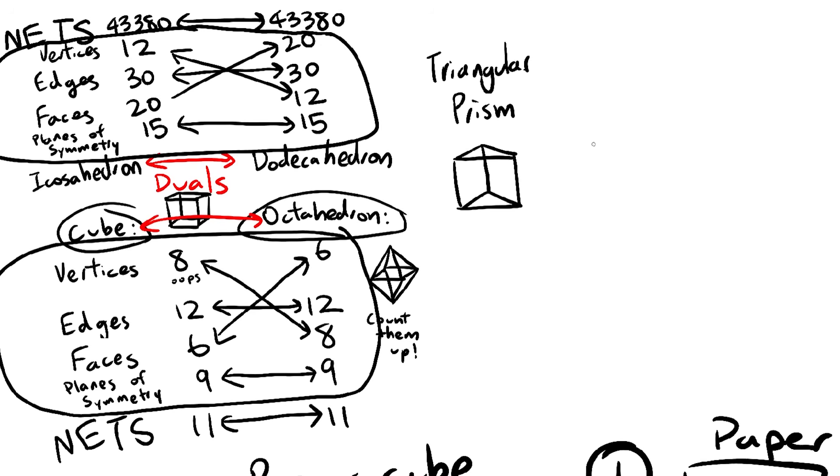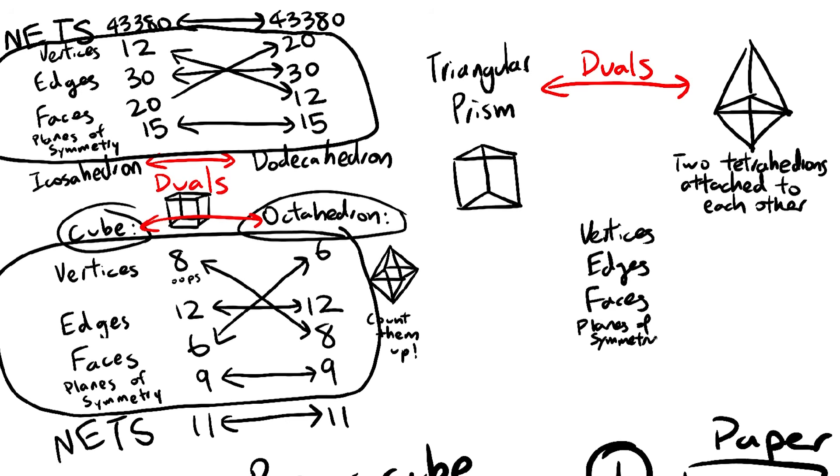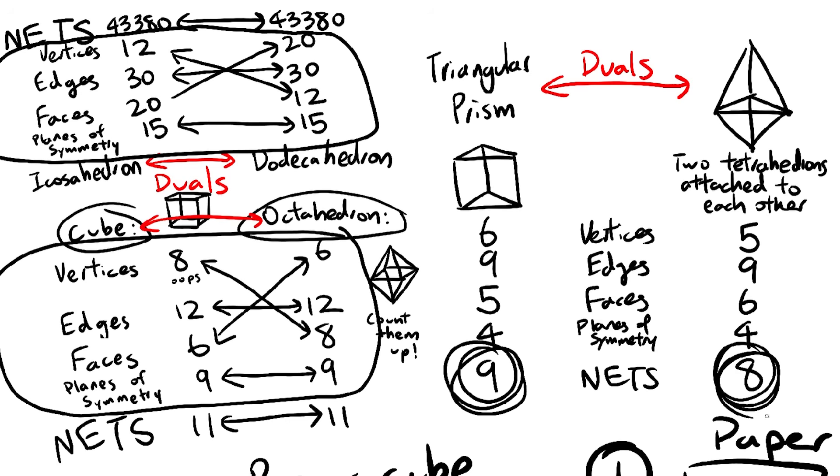But the problem is that this pattern completely breaks. A triangular prism has 9 nets, but its dual, this double tetrahedron thingy, only has 8. Or at least I think it does. I may have miscounted, but I don't have any way to check. I couldn't find the number of nets online.